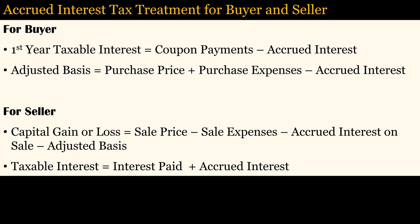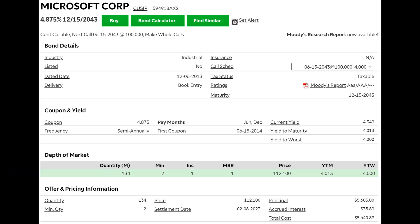For the buyer, the accrued interest of the purchased bond is treated as a return of capital, so the buyer can subtract the accrued interest from the interest reported on Form 1099-INT. The buyer's adjusted basis in the bond is reduced by the same amount. The seller must report that part of the sale's proceeds attributable to the accrued interest as ordinary interest income. You do not have to worry about calculating the accrued interest, since most bond listings display the accrued interest for a given settlement date.